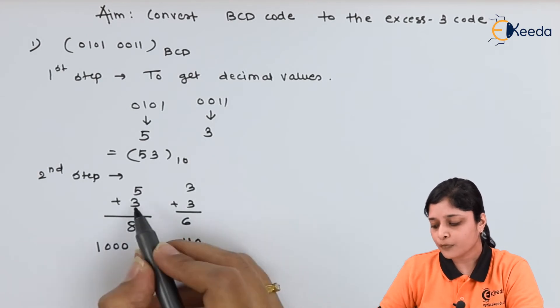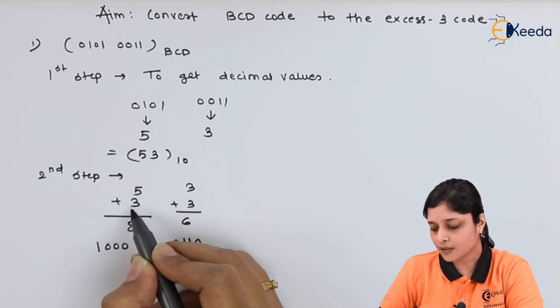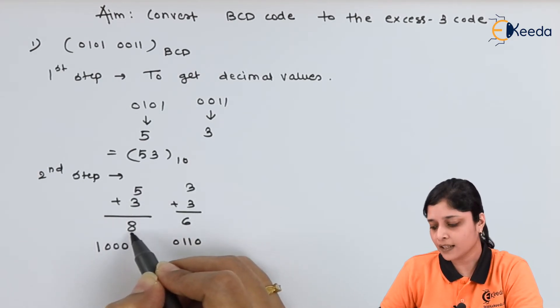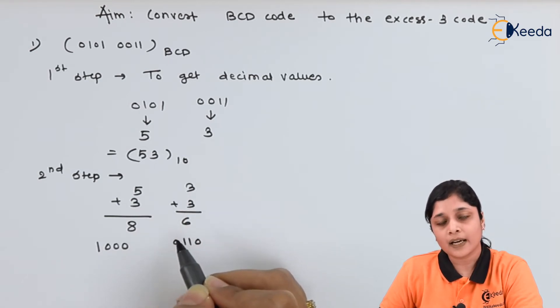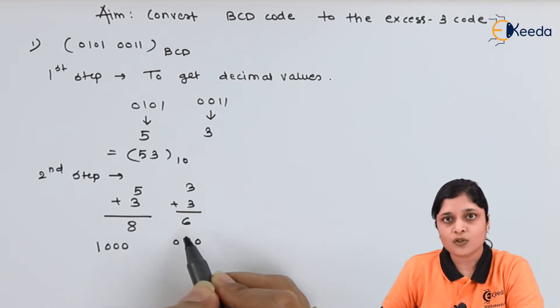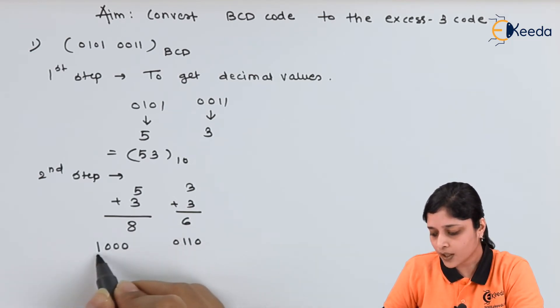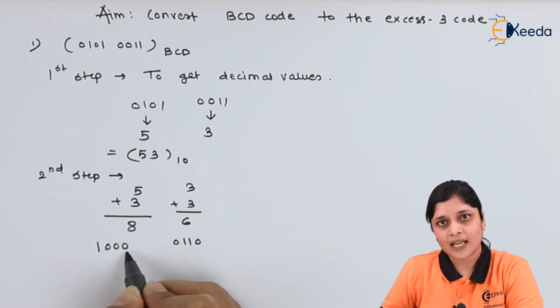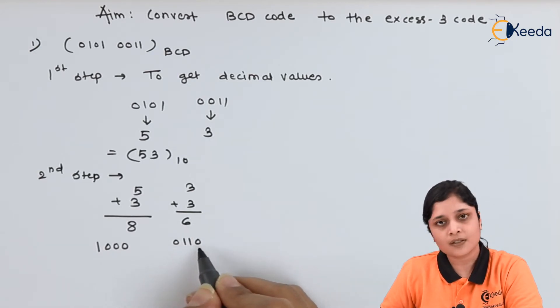So after performing the addition, 5 plus 3 you will get 8, then 3 plus 3 you will get 6. Write down separately the binary for 8 and 6. So the binary for 8 is 1000 and binary for 6 is 0110.